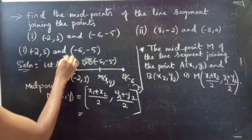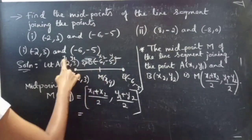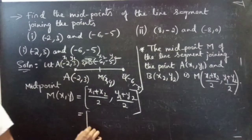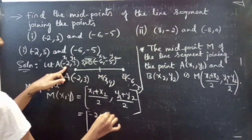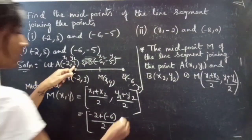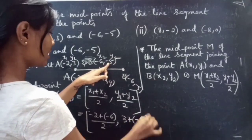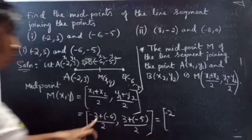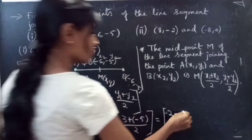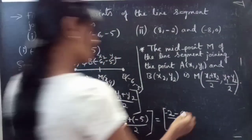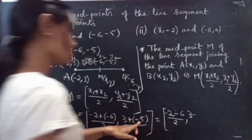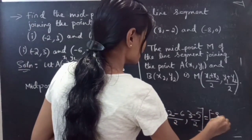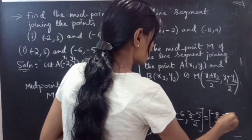Here X1, Y1, X2, Y2 — you are having X1, Y1 and X2, Y2. Now substitute the values of X1, X2 and Y1, Y2: X1 minus 2 plus X2 minus 6 by 2 comma Y1 which is 3 plus Y2 minus 5 by 2. This equals minus 2 plus minus 6 by 2 comma 3 plus minus 5 by 2, which is minus 2 minus 6 equals minus 8 by 2 comma 3 minus 5 is minus 2 by 2.